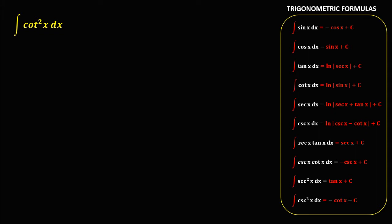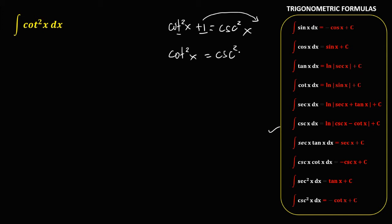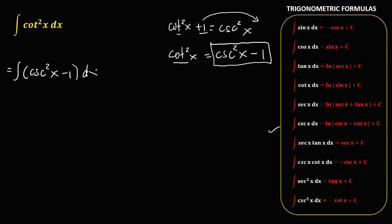For this given, the integral of cotangent squared x. Since there's no integral of cotangent squared x in these formulas, we're going to use a trigonometric identity: cotangent squared x plus 1 is equal to cosecant squared x. To solve for cotangent squared x, transpose this positive 1 to the right. So cotangent squared x is equal to cosecant squared x minus 1. We substitute this equation for cotangent squared x. So our new equation is cosecant squared x minus 1, dx.